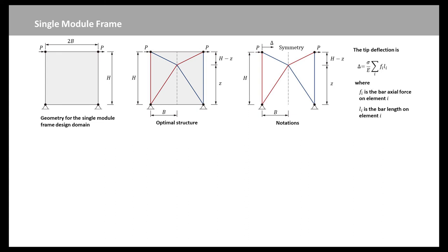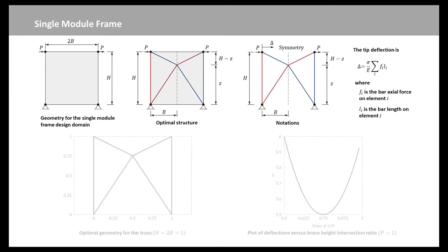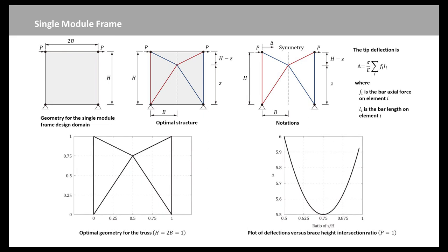We are looking for the optimal location that minimizes the deflection at the top of the structure, assuming each member to have a constant stress sigma. The tip deflection is delta equal to sigma times b over Young's modulus e times the summation of internal forces times length of all elements. We now assume that h is equal to 1 and it is also equal to 2 times b.